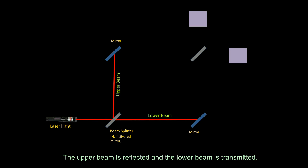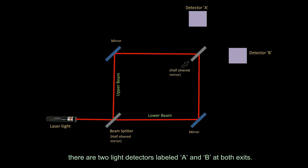Both beams reach full-silvered mirrors fixed at two corners, which reflect them into another beam splitter — also a half-silvered mirror. There are two light detectors, labelled A and B, at both exits.